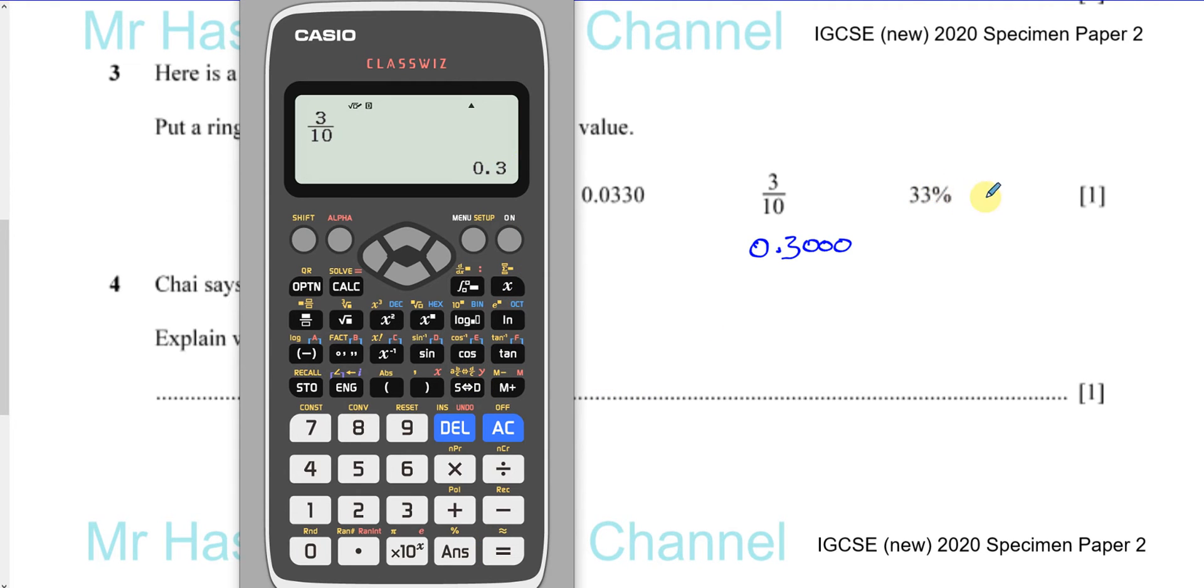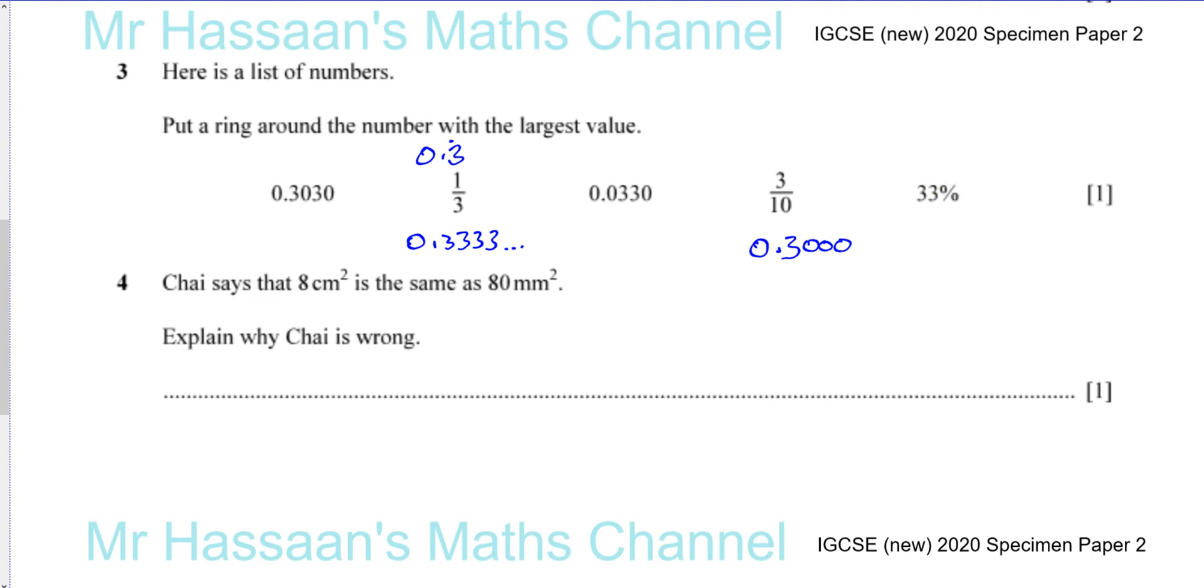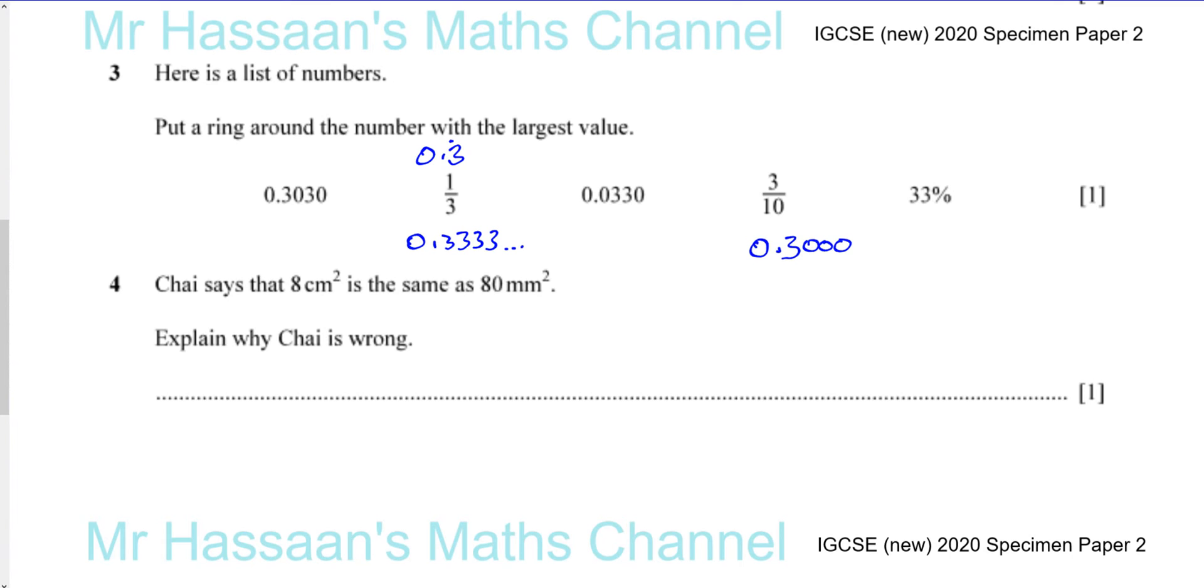And 33% simply means 33 over 100. Okay, this is the same as 33 over 100. So you have 33 over 100. Okay, which means you move the decimal place back two spaces, which is going to be 0.33. Okay, and again, I'm going to put two zeros at the end to compare them.